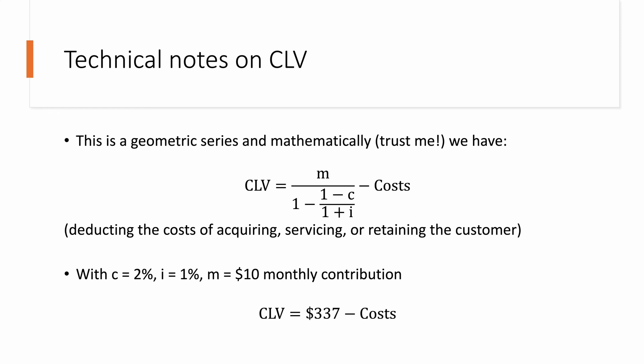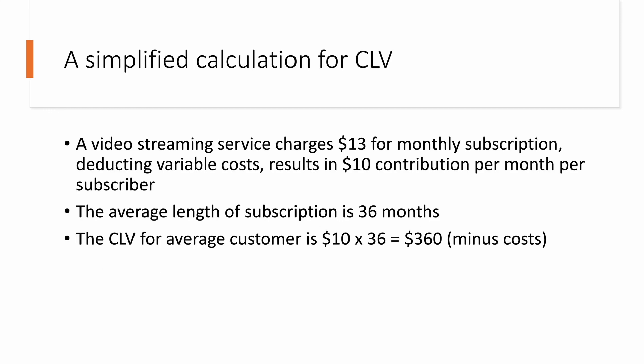There is a simpler way to calculate CLV on an average basis. A video streaming service charges $13 for monthly subscription, deducting variable costs resulting in $10 contribution per month per subscriber, and the average length of subscription is 36 months. Instead of aggregating lifetime value over an infinite number of months, we use the average subscription length of 36 months. So the CLV for an average customer is simply $10 times 36, giving $360 minus costs.